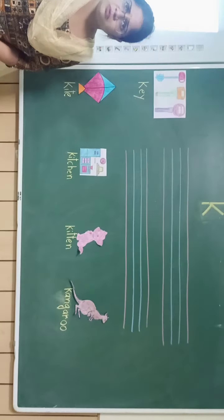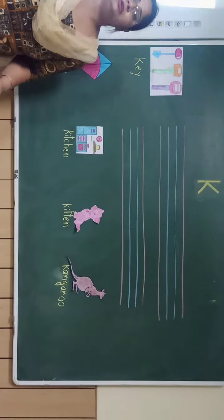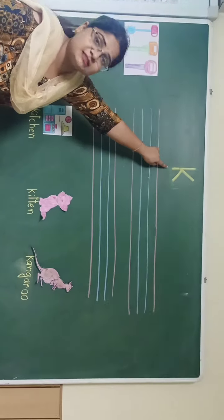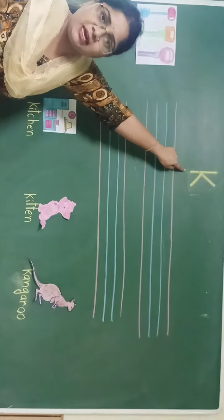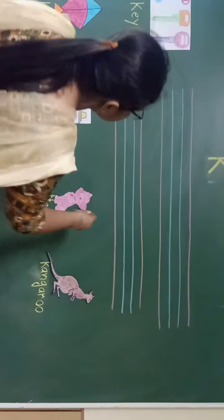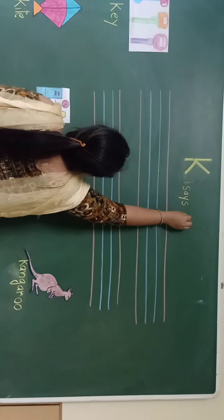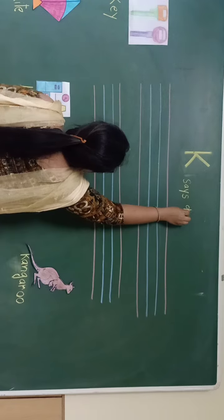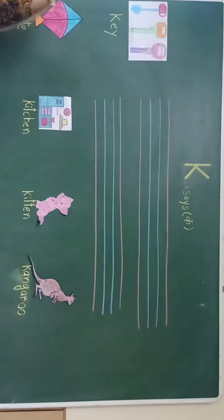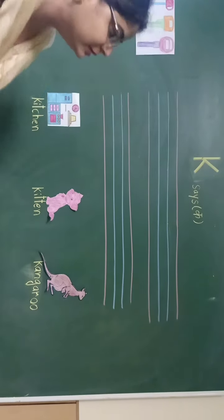Do you observe one thing? These all pictures start from letter K. Which letter is this? Letter K. Speak up everyone. Letter K. And what is the sound of letter K? K says /k/. K says /k/. We are having more words that start from letter K.